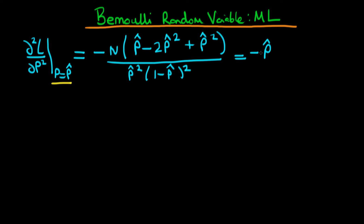And so I can take out a factor of P-hat as well as N, and that's just then going to yield P-hat times N times 1 minus P-hat, all divided through by P-hat squared times 1 minus P-hat all squared.